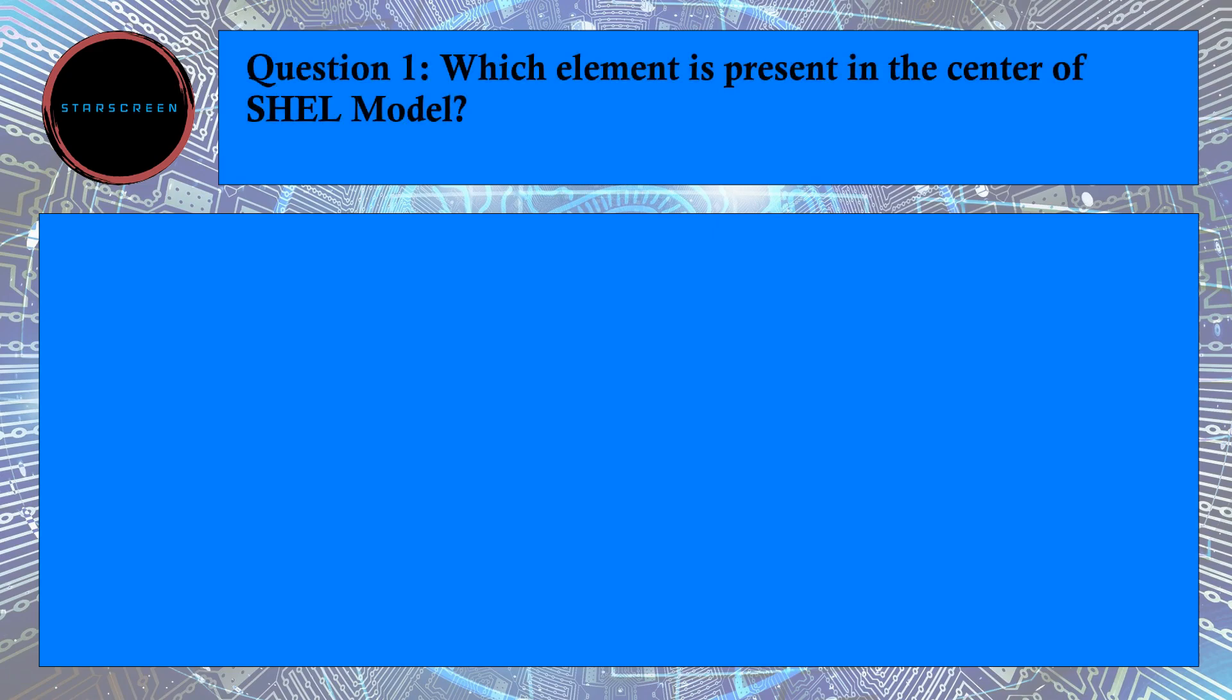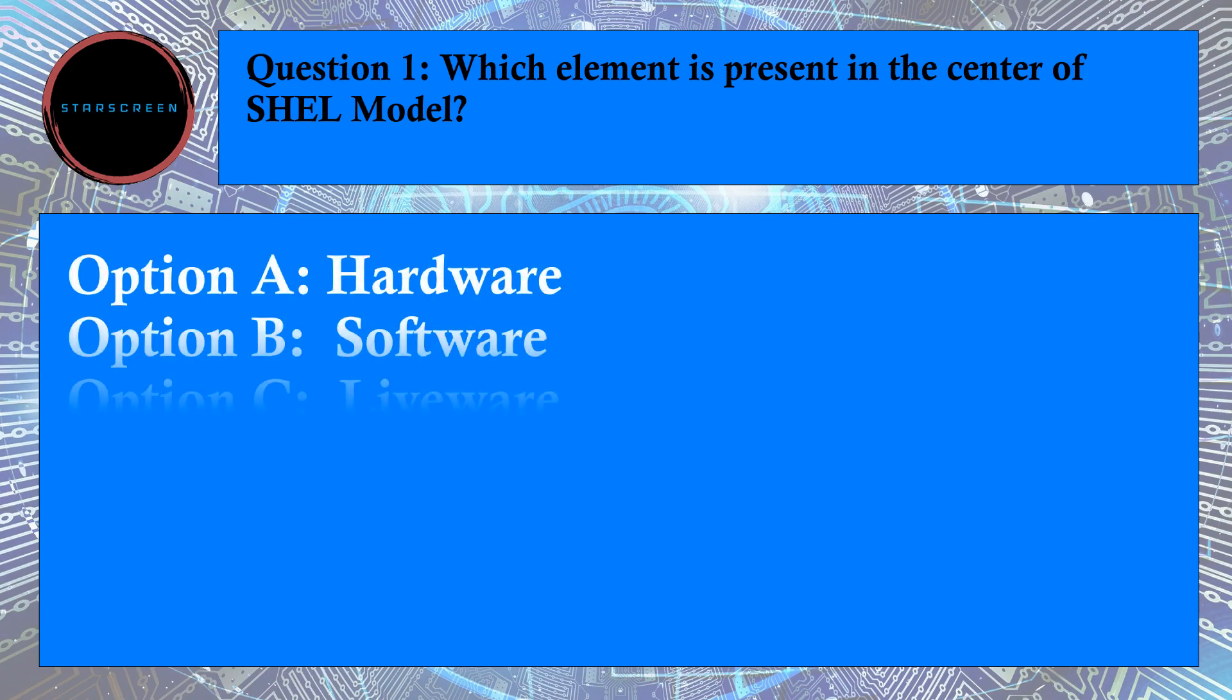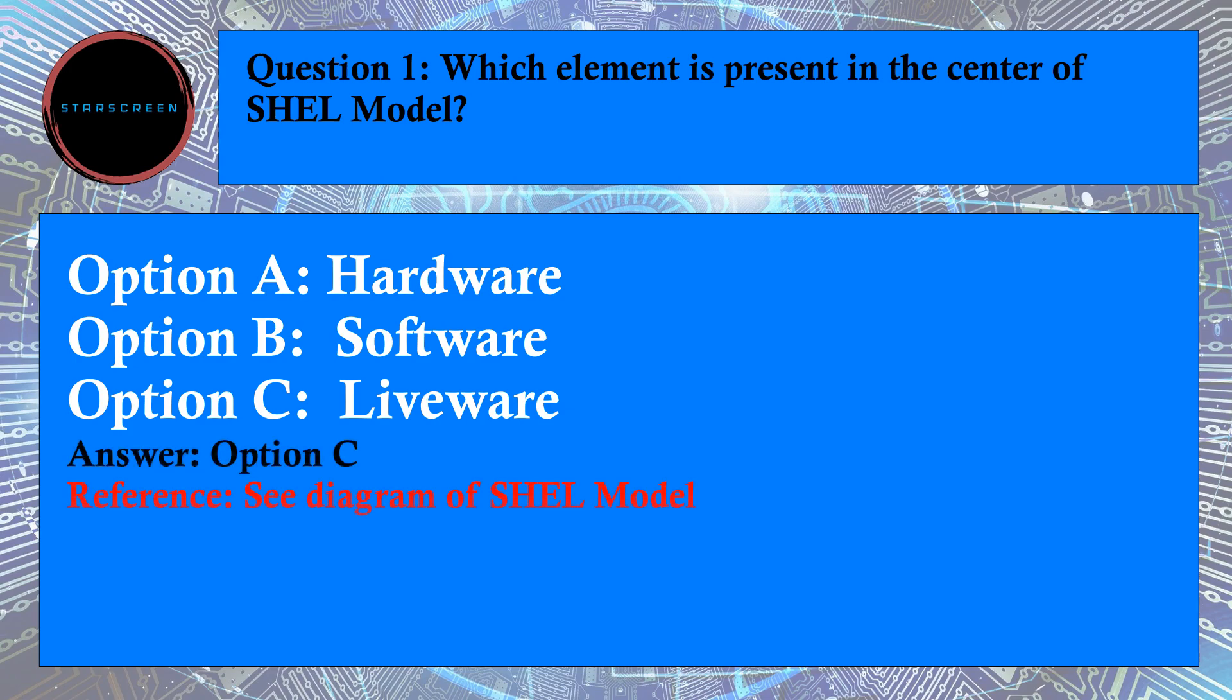Question number 1: Which element is present in the center of shell model? Option A, Hardware, Option B, Software, and Option C, Liveware. Correct answer is C, Liveware. For answer, refer to the diagram of shell model.